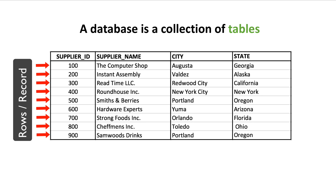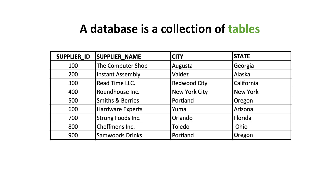A column is supposed to contain information of the same type — cities should only have cities, supplier names should only have supplier names. You can't put a supplier ID into the supplier name column; that's a big no-no in databases. Horizontally, each record is a particular supplier. It would be a big no-no to put an employee into the suppliers table because it should only store supplier information — attributes like supplier name or supplier ID don't relate to an employee. Databases are typically smart enough to flag when you're trying to insert wrong data.